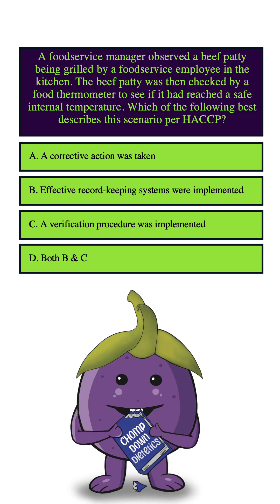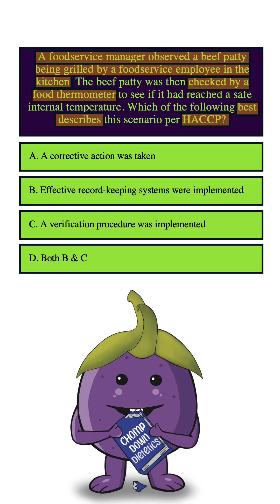Let's highlight the whole first sentence, the phrase 'checked by a food thermometer,' the phrase 'best describes,' and the term HACCP, since those are all key to this question. Now let's go through the answer choices. With A, the question doesn't mention a corrective action being taken at all. All the question is telling us is that a food thermometer was used to see if the beef patty had reached a safe temperature — nothing about whether it had or hadn't reached a safe temp, or what was going to be done if it hadn't. So there's no mention of a corrective action, and we can eliminate this answer choice.